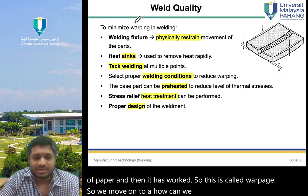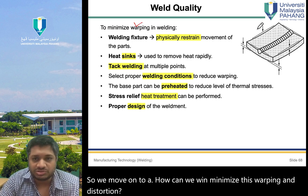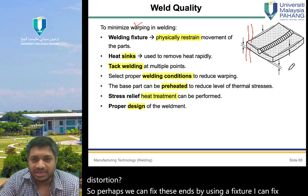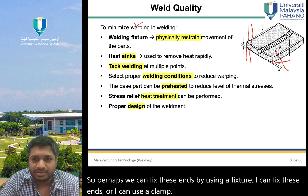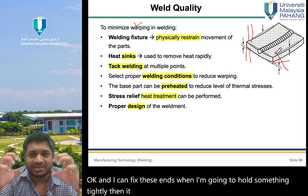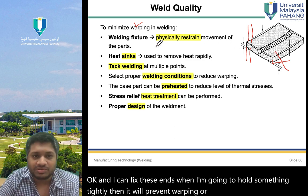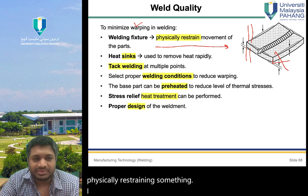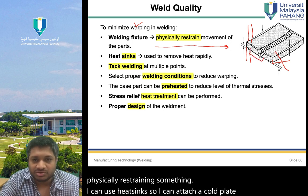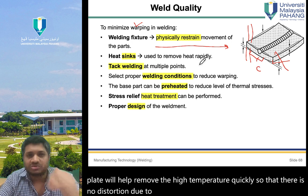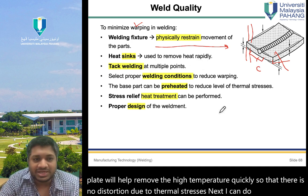To minimize warping and distortion, we can fix the ends using a fixture or clamp — this is called physically restraining. We can also use heat sinks by attaching a cold plate beneath, which helps remove high temperature quickly so there is no distortion due to thermal stresses.